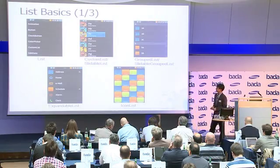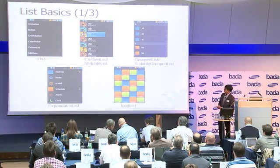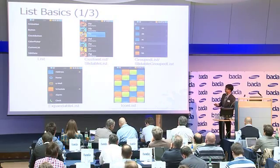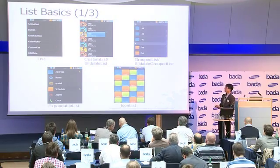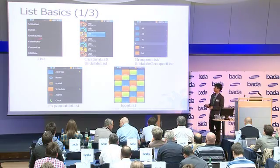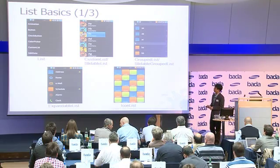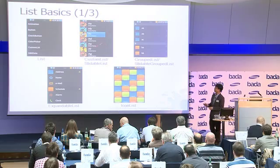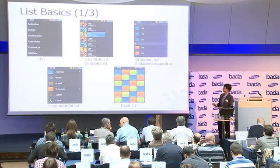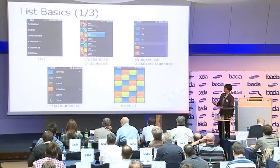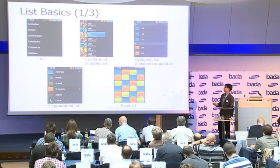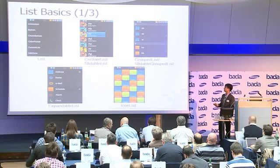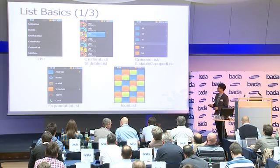We have five different types of lists. First, the simple list — we've created 11 predefined types that you can use. We found that even with all those options, it doesn't offer enough flexibility, so we created a custom list where everything is up to you. You can create items of different heights — in my example all items are the same height, but yours could vary. We also have the slidable list variant, which provides the memory-saving feature.